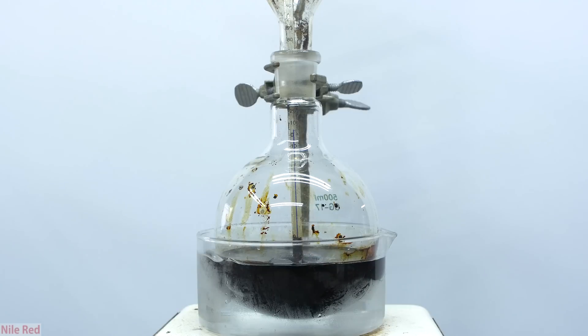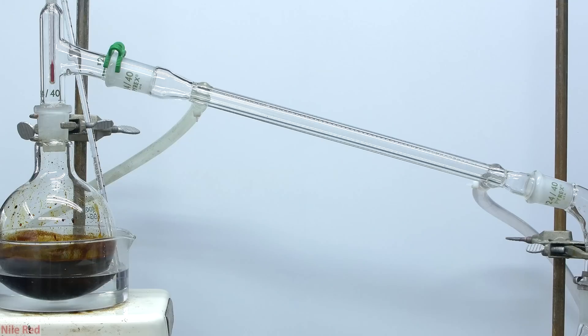Once all the red phosphorus has been added, we let it stir for a little bit and set up a simple distillation apparatus. Here's our simple distillation apparatus, and to heat things we use a hot water bath which is heated to around 70°C.